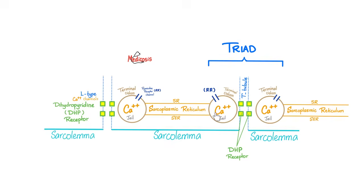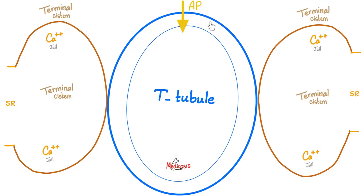Here is the sarcoplasmic reticulum with the terminal cistern, and the T-tubule in between. We call this the triad. The triad is made of one T-tubule and two terminal cisterns. Action potential has arrived and now it's time to release calcium from the jail.